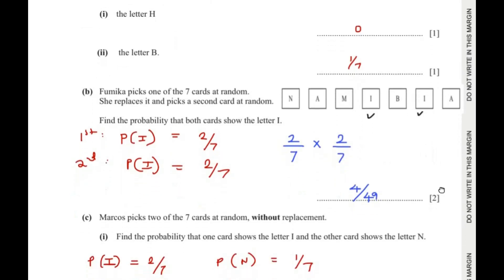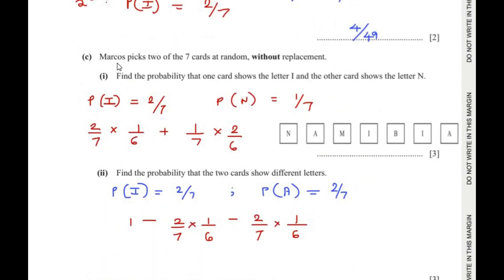Now moving on to part C. Marcos picks 2 of the 7 cards at random without replacement. He keeps the first card with himself, so the total number of cards reduces to 6 for the second pick.